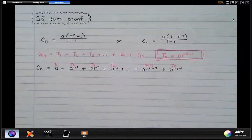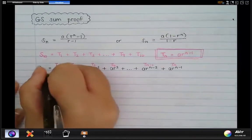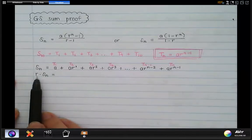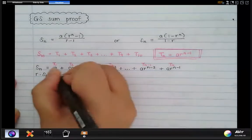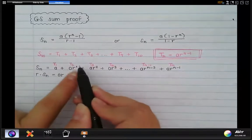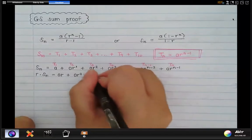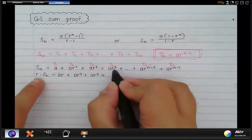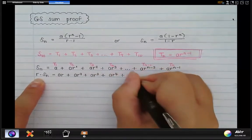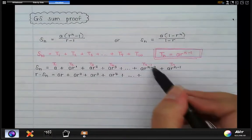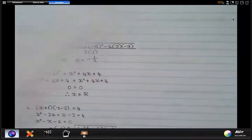Now in our next line we are going to write r times S_n. We take every single term from the first line and multiply it by r. So term one times r: a·r = ar. Term two times r: ar·r = ar². Then ar²·r = ar³. ar³·r = ar⁴. Plus dot dot dot, and we would have all the in-between terms. We need to multiply the last terms by r as well — let me show that calculation separately.